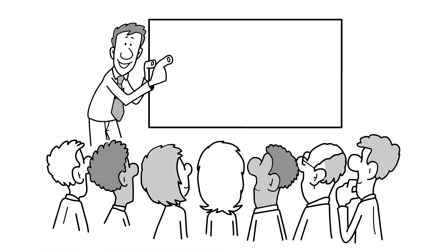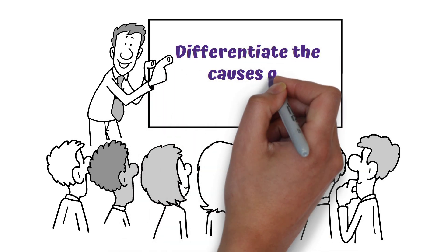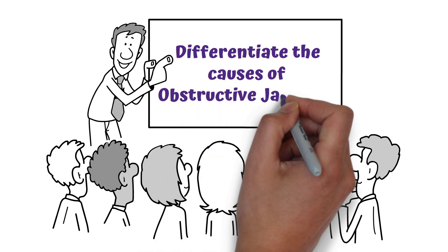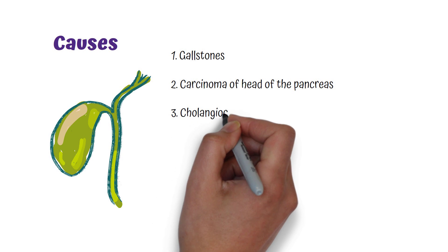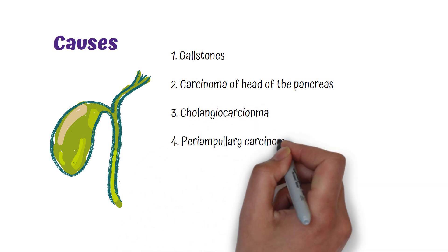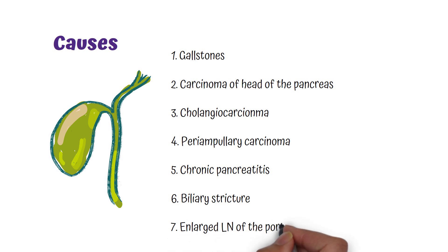Hi guys, welcome back to Learn with Med Nuggets. This is a short video that will help you differentiate the causes of obstructive jaundice. The causes I will be talking about are gallstones, carcinoma of the head of the pancreas, cholangiocarcinoma, periampullary carcinoma, chronic pancreatitis, biliary stricture, and enlarged lymph nodes of the porta hepatis.